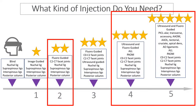Now, what kind of injections do you need? If you've got the type 3A in flexion, the good news is that literally just treating the posterior ligaments can make a big difference — those are more posterior injections. But if you've got type 3B that happens in extension, then you're looking at a little bit more complex injections that have to come from the front and get that anterior longitudinal ligament.